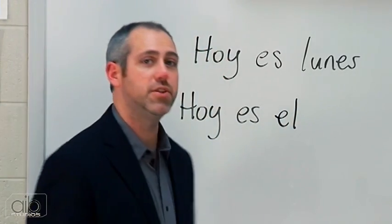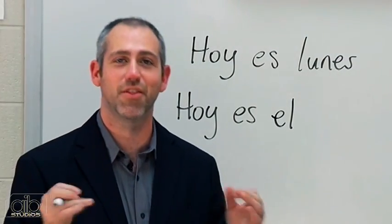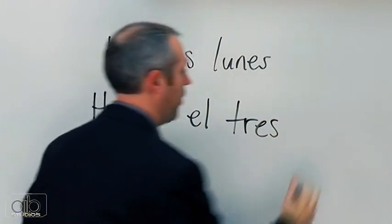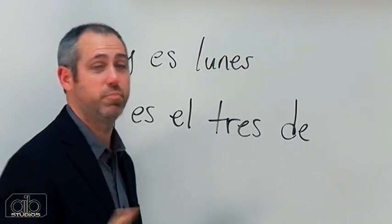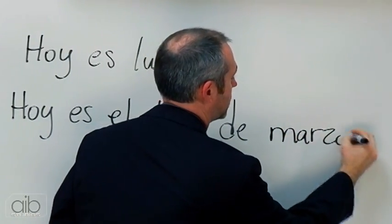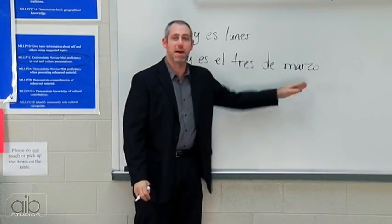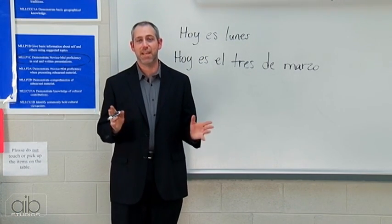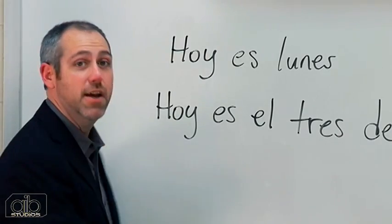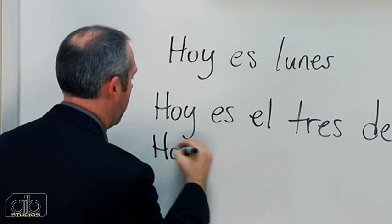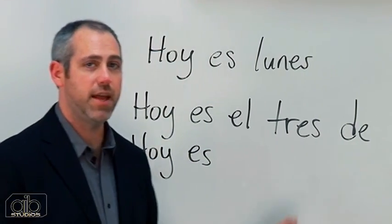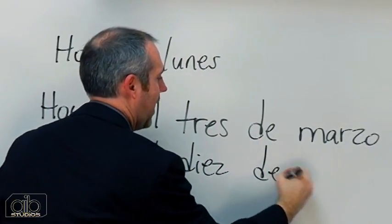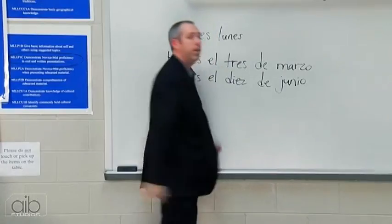If I wanted to say it's June 10th, I would say the 10 of June — hoy es, el diez, de junio. Let's try one on your own: today is the 28th of July — hoy es el 28 de julio. And one more: today is February 27th — hoy es el 27 de febrero.